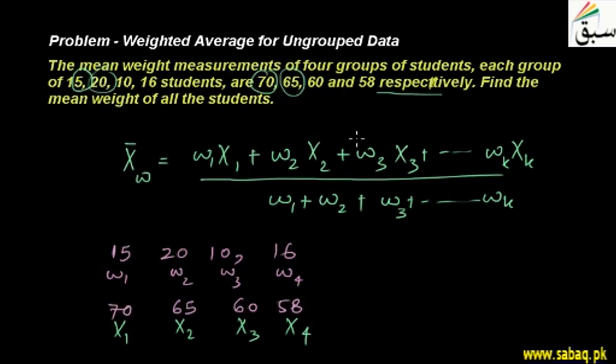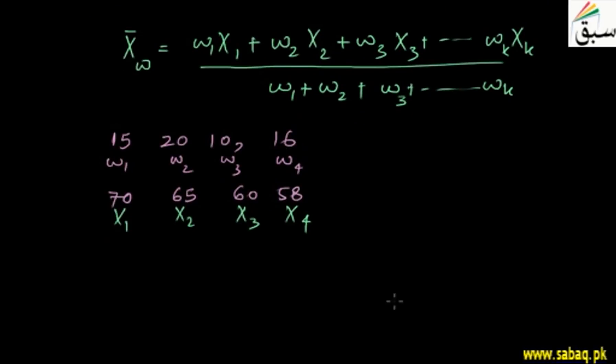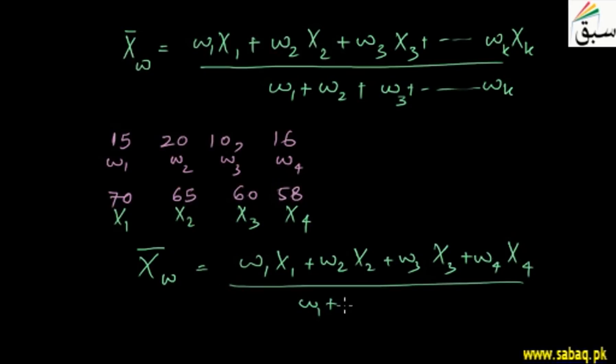If we put in this formula, X bar average is equal to W1 X1 plus W2 X2 plus W3 X3 plus W4 X4 divided by the weightage W1 plus W2 plus W3 plus W4.